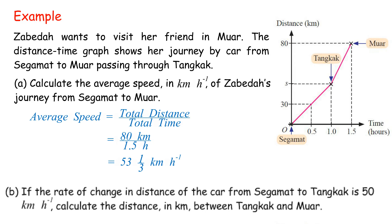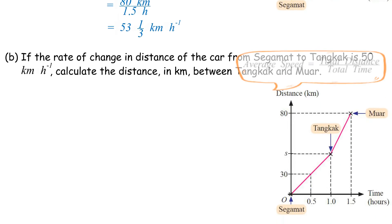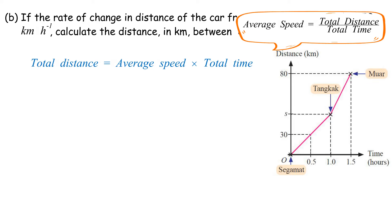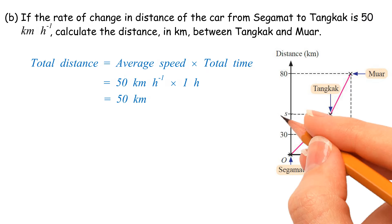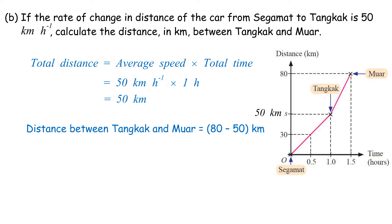B. If the rate of change in distance of the car from Segamat to Tangkak is 50 km per hour, calculate the distance in km between Tangkak and Muar. Total distance equals 50 km per hour times 1 hour, equals 50 km. Distance between Tangkak and Muar equals 80 minus 50 km, equals 30 km.